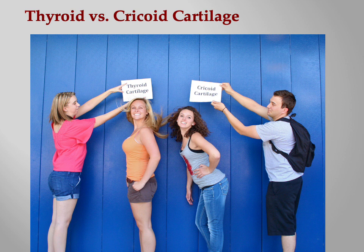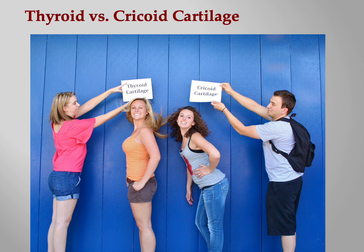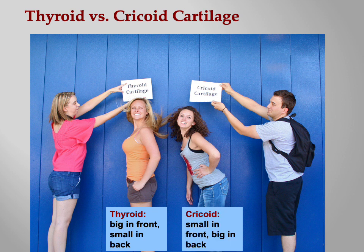McKenna said: 'I'm big in the front and small in the back, and Stephanie is small in the front and big in the back.' The whole class thought it was hilarious, so we went outside and took a picture. So: thyroid — big in front, small in back; cricoid — small in front, big in back.